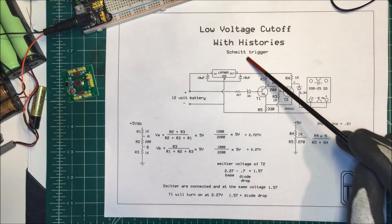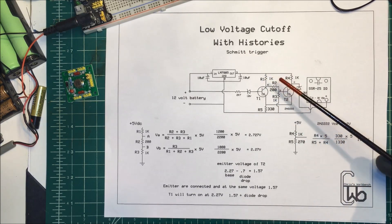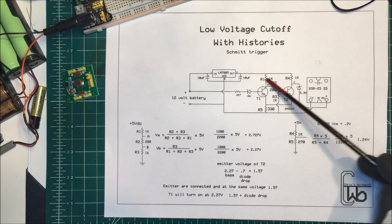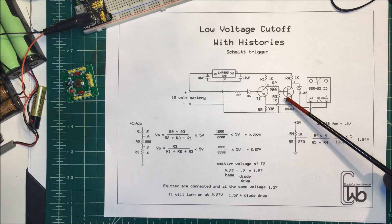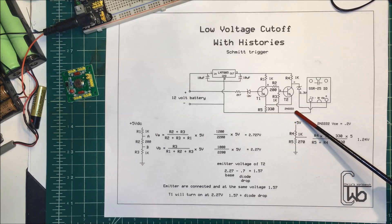So to do that I'm going to use a Schmitt trigger. Now Schmitt triggers have a built-in hysteresis to them and a common way to make a Schmitt trigger is just with two transistors. I'm just using two 2N2222's here.